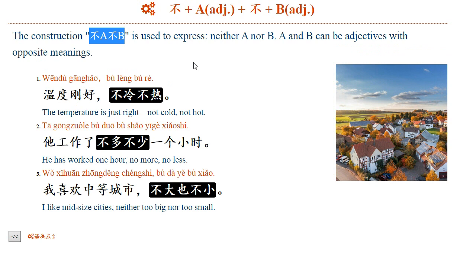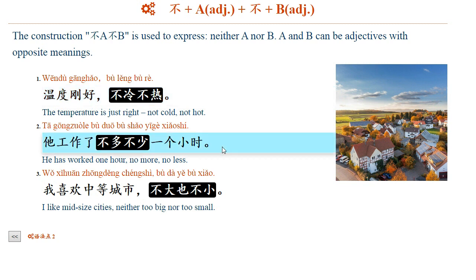The construction 不A不B is used to express neither A nor B. A and B can be adjectives with opposite meanings. For example: 温度刚好，不冷，不热 — not cold, not hot. 他工作了不多不少一个小时 — 不多不少, no more, no less. 我喜欢中等城市，不大也不小 — neither too big, nor too small.